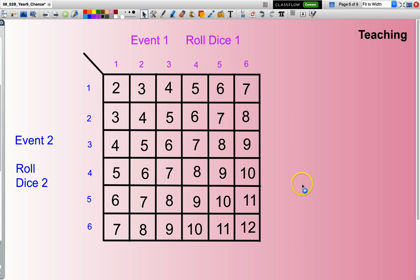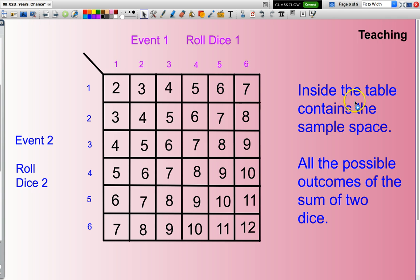In here, this is a list of all my possible outcomes, or it's commonly referred to as my sample space. Over here, I have my events. Inside the table contains the sample space, all the possible outcomes for the sum of two dice.